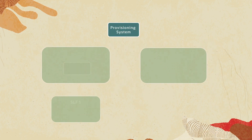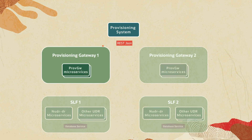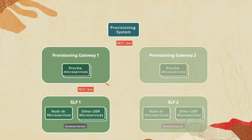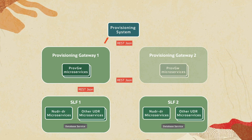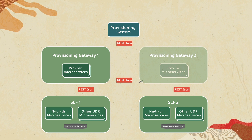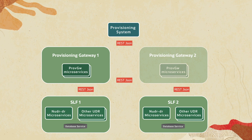UDR supports storage and retrieval of subscriber location function, or SLF, information that NRF consumes. The 5G SLF solution supports Group ID Map Service as defined by 3GPP and registers with NRF for this service. UDR supports REST JSON-based provisioning APIs for SLF data via the Provisioning Gateway application.